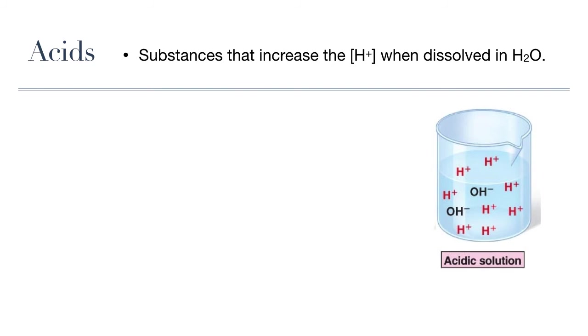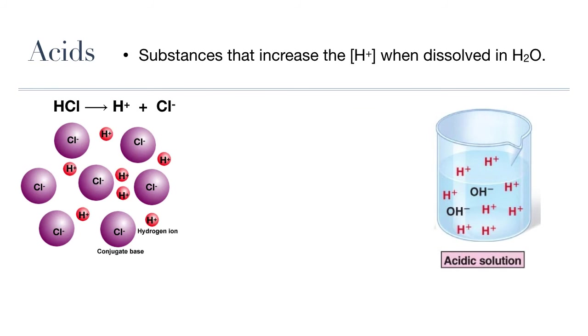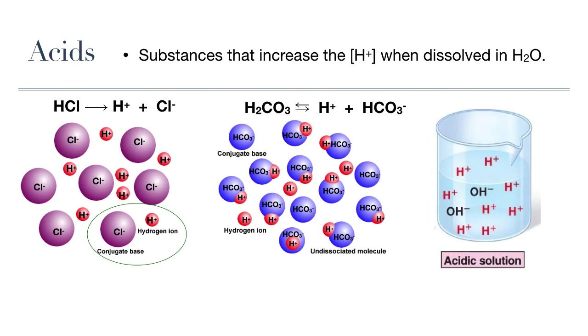Remember that acids are substances that increase the hydrogen ion concentration when in solution. In solution, they will dissociate into hydrogen ions or protons and their conjugate base. Now, strong acids, like this hydrochloric acid here, will dissociate or ionize fully in water so that all possible hydrogen ions or protons are released into the solution. Weak acids, on the other hand, do not dissociate fully, and only some of the hydrogen ions are released into the solution.